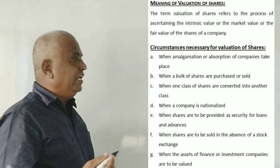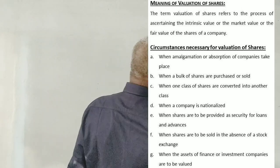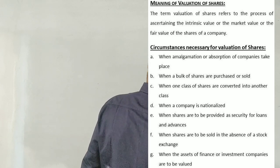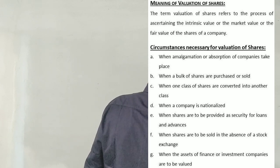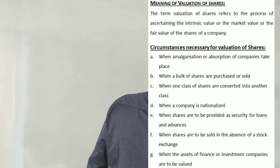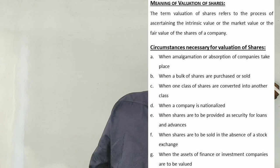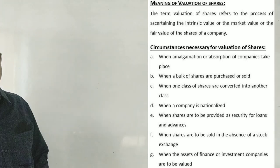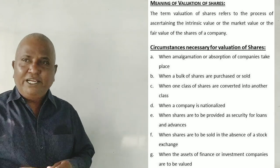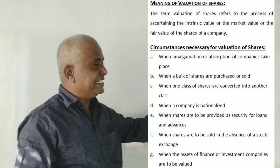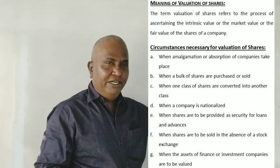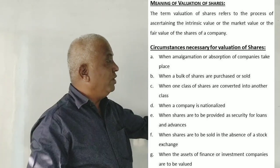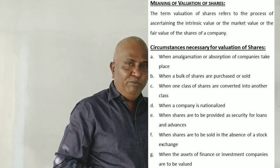Method three is a fair value method. What is the fair value method? In the syllabus, we have three methods: number one is the net asset method, number two is the yield method, and number three is the fair value method.